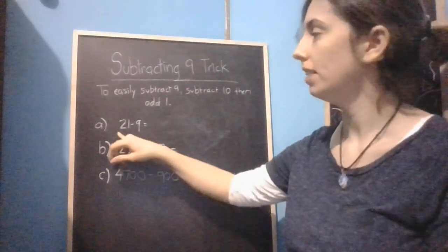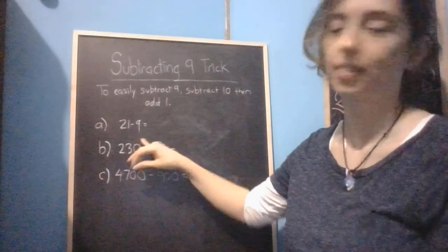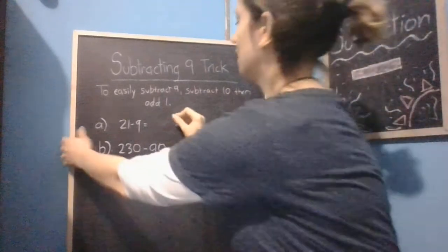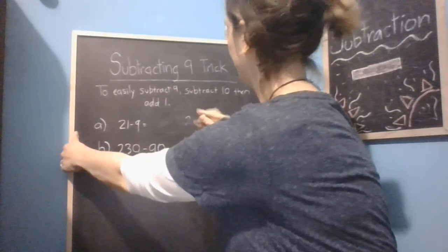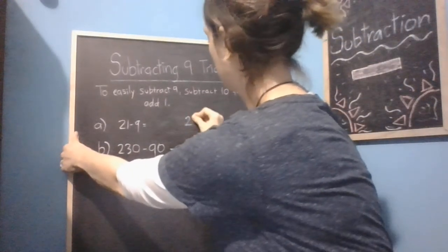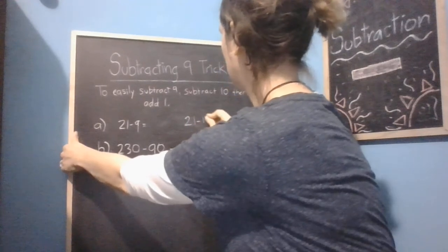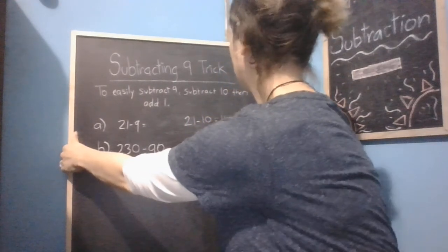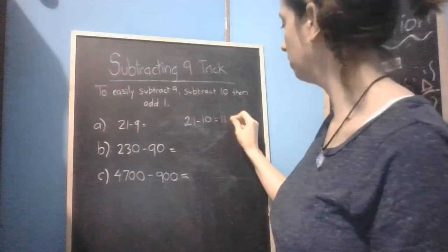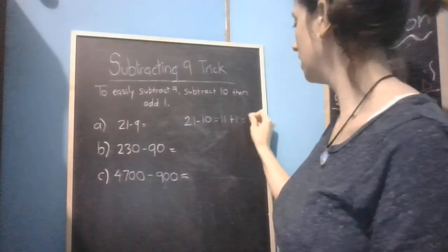So let's say you've got 21 minus 9. The easiest way to work that out is to go, 21 minus 10 is 11. Now we've just got to add a 1 back on, which gives us 12.